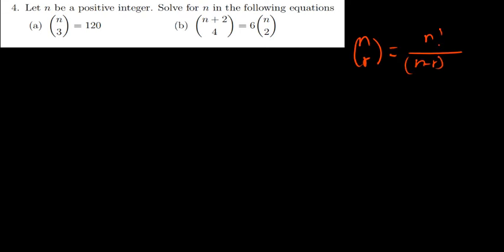One thing we know is that when I've been given n choose r, what we normally do is we say n factorial divided by n minus r, that factorial, then r factorial. So it's basically the same principle which we're going to use.